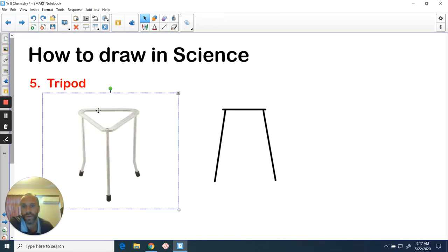Tripod, I've already drawn this one out. This is one that students struggle with because they always attempt to do it in 3D. Now you don't need to do it in 3D, and therefore you only need to show two legs of the tripod. The tripod again is super simple to draw: just need one, two, three lines like so.